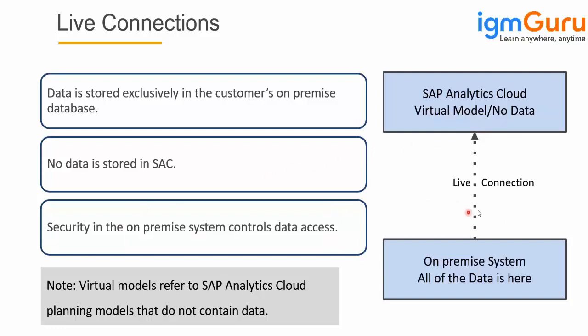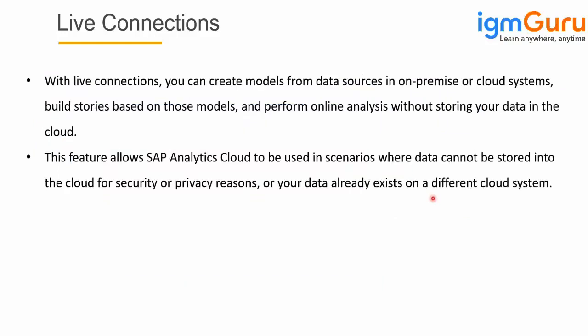With live connections, you can create models from different data sources. It supports both on-premise and cloud systems, and analysis is performed without storing your data in SAC. This feature allows SAC to be used in scenarios where data cannot be stored — for example, when working with European or Middle East clients who don't want their data moved to a remote location or stored in other locations. They are very specific about data restrictions.